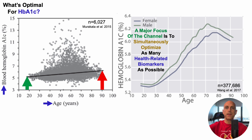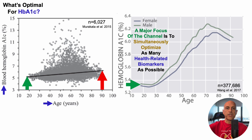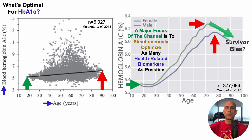In the second study, which included about 378,000 people — and I always try to look for the largest epidemiological studies to examine age-related changes and all-cause mortality risk — average HbA1c values in youth around 20 years for both women and men was about 5.3%, which then increased during aging with a peak in the 70 to 80-year range. But then something interesting happens: HbA1c actually declines, which is new to me.